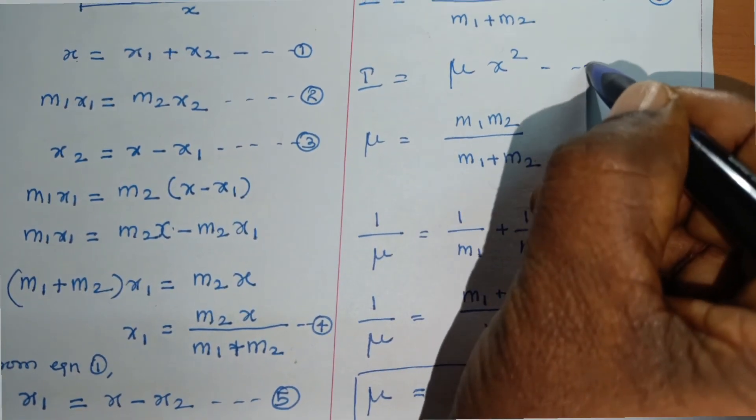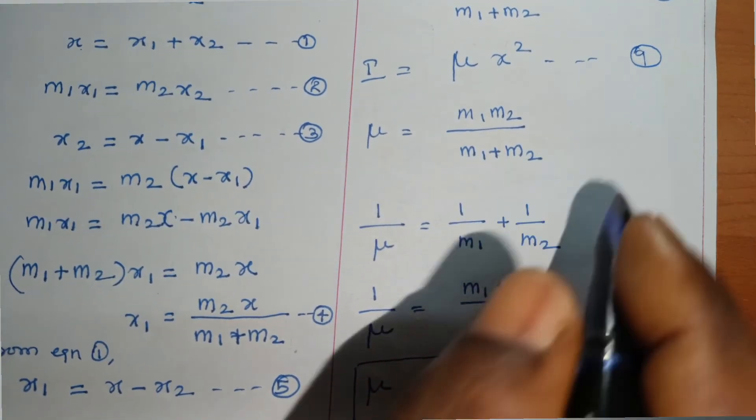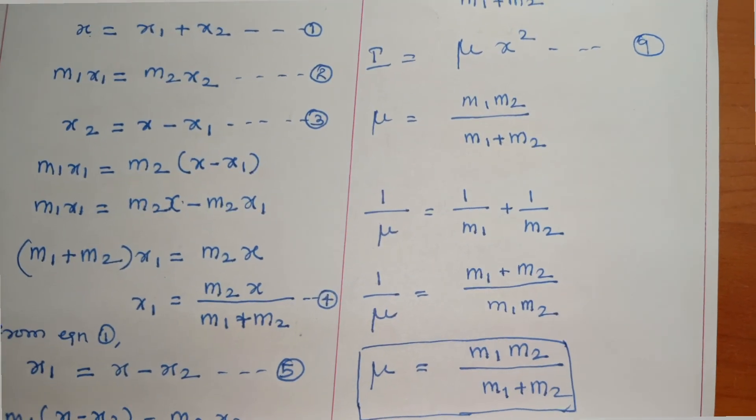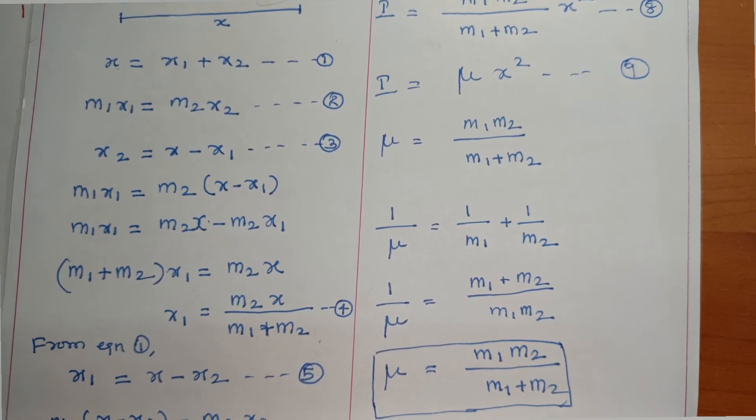This is equation number 9: the moment of inertia of a diatomic molecule. Thank you.